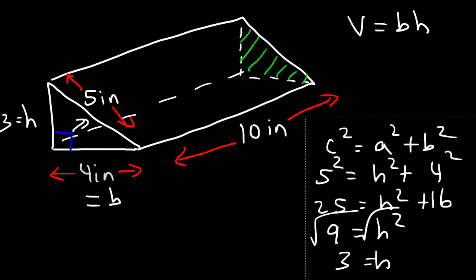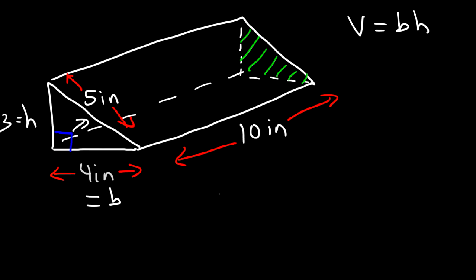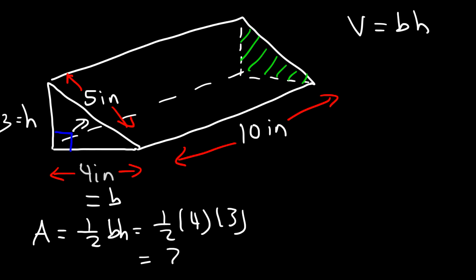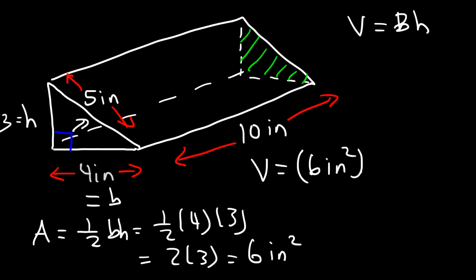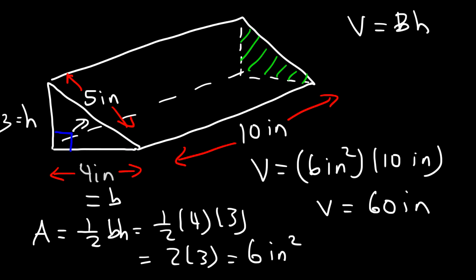So now we can calculate the area of the base, which is the area of the right triangle. That's 1 half base times height, so half of 4 times 3. Half of 4 is 2, and 2 times 3 is 6. So the area of the base is 6 square inches. Now we can calculate the volume — capital B is the area of the base, which is 6, and the height of the prism is 10. So 6 times 10 is 60. The volume of this triangular prism is 60 cubic inches.